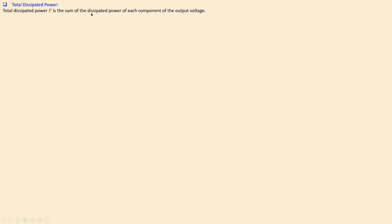The dissipated power P is the sum of the dissipated power of each component of the output voltage: P = P_0 (DC) + P_1 (fundamental) + P_3 (third harmonic) + P_5 (fifth) + P_7 (seventh), and so on for odd harmonics only. We don't need P_2, P_4, P_6, P_8 since those terms don't appear in the input signal. Alternatively, we can calculate the total RMS voltage and use V_RMS²/R directly — both methods give the same result.